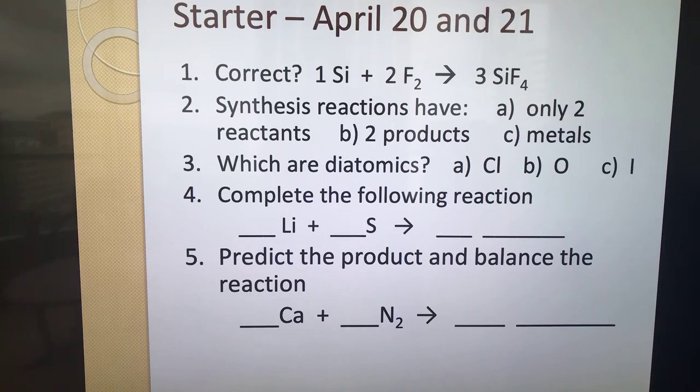Iodine is way over on the right side, element number 53. Number four, I want you to take a look at that reaction. I'm starting you out with two reactants, lithium and sulfur, and giving you a chance to predict the product. Remember, this is synthesis, and then balance the entire reaction.